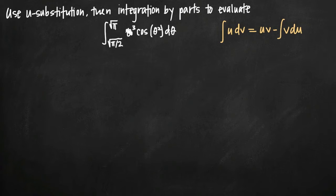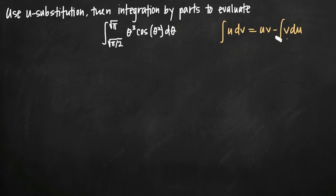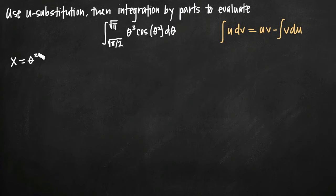We need to identify the substitution to make in this function. A good place to start is to substitute for theta squared, because having theta squared inside the cosine function means we could have a little trouble with this — we want to simplify what's inside our trigonometric function as much as we can. Normally I would use u as the variable, but we'll need u available later for integration by parts. So let's use x-substitution and set x equal to theta squared.